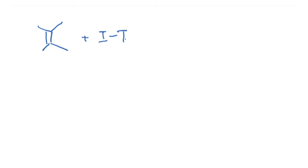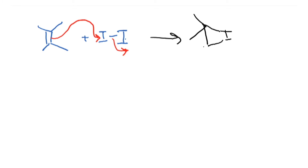When we start with the olefin in the presence of I2, iodine acts much like bromine does. Pushing an arrow from the olefin, we attack the iodine and the other iodine is kicked out. The product is the cyclic iodonium ion, with iodide as the byproduct.